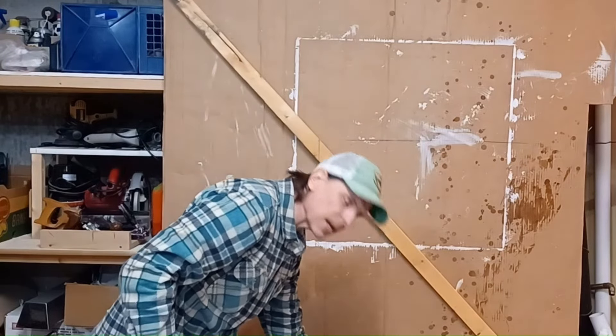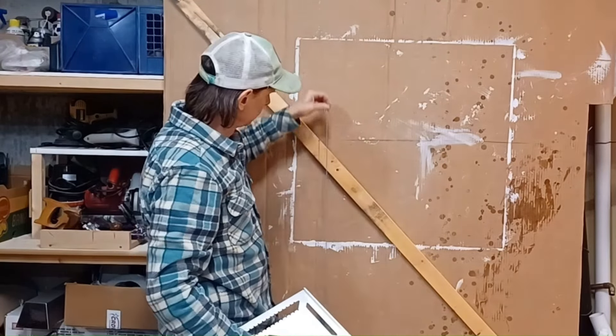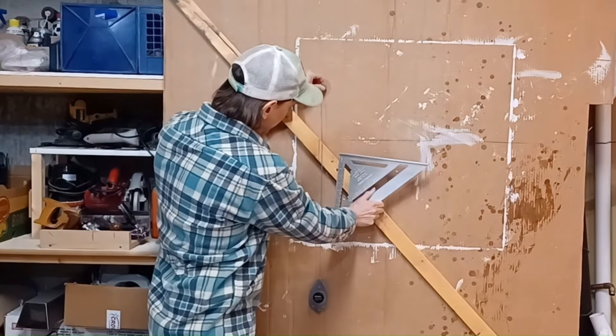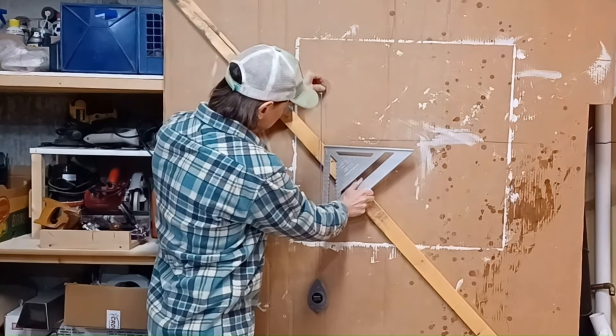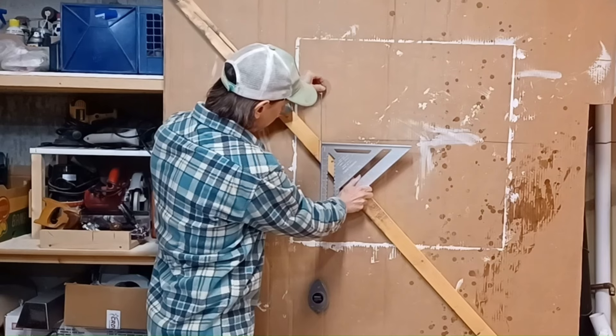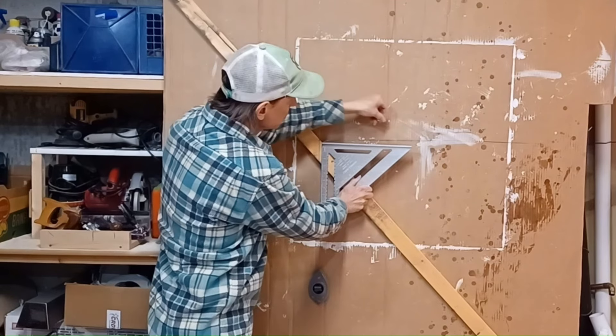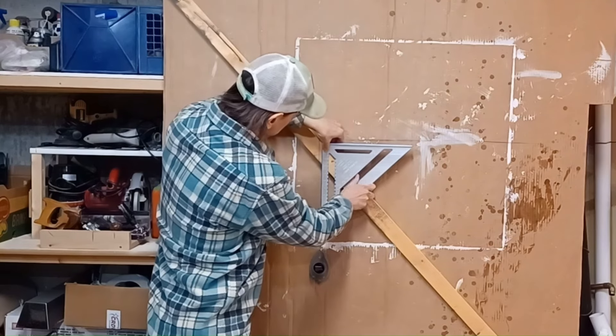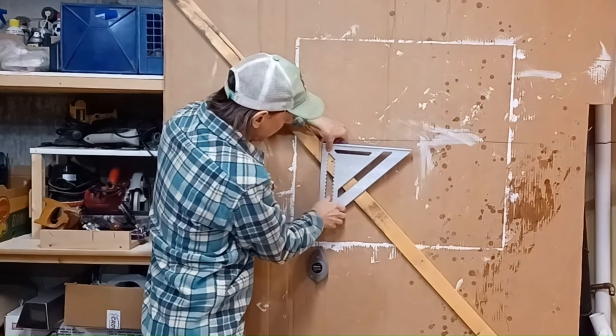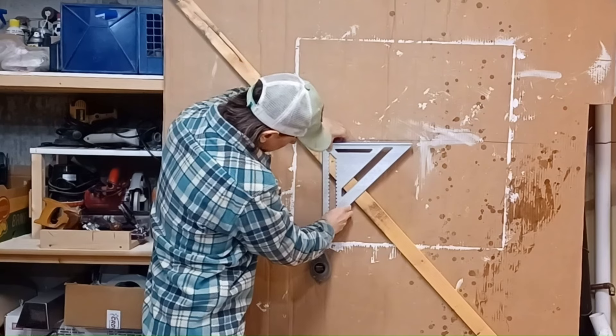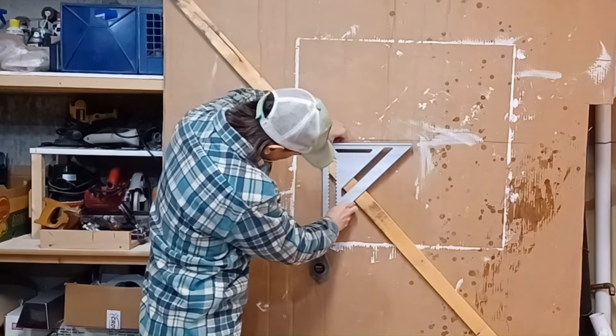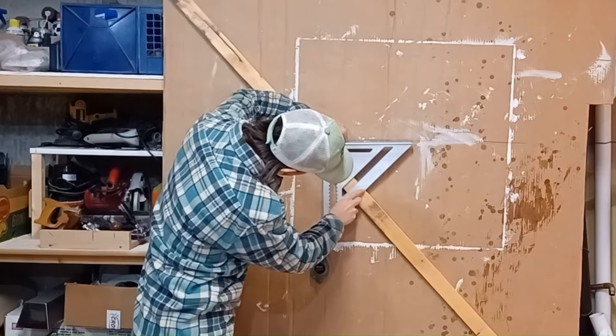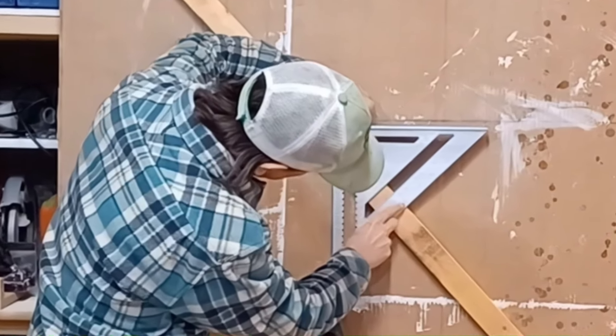That's why you'll sometimes see people run a plumb line and then level up the edge of their speed square with the plumb line. Easy way to do that is just hook this over here. Keep that pivot on the board. Line this edge up with the plumb line and read your angle right here.